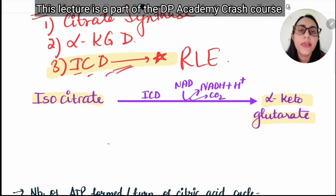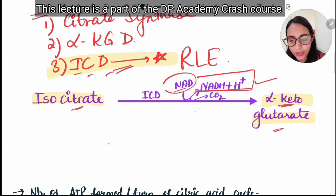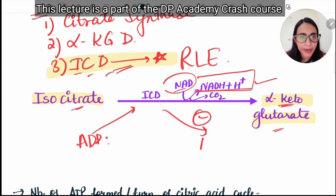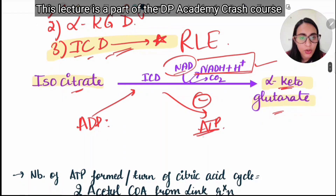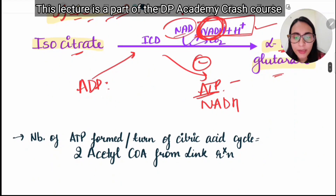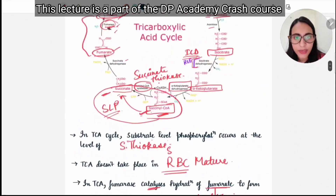In the rate-limiting step, isocitrate is converted to alpha-ketoglutarate by isocitrate dehydrogenase. NAD⁺ is converted to NADH + H⁺, and CO₂ is released as a byproduct. This step is stimulated by ADP and inhibited by ATP (high energy state) or by NADH. We can now look at the steps where ATP is formed in the TCA cycle.